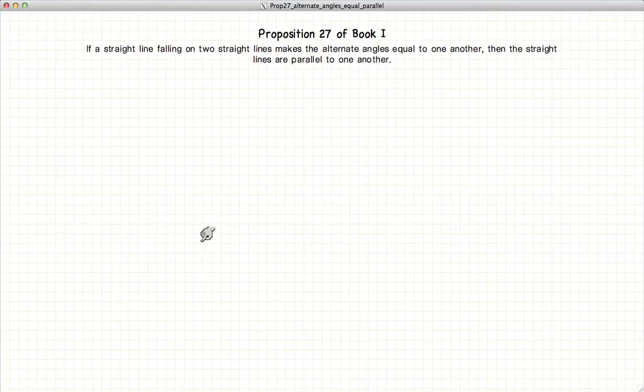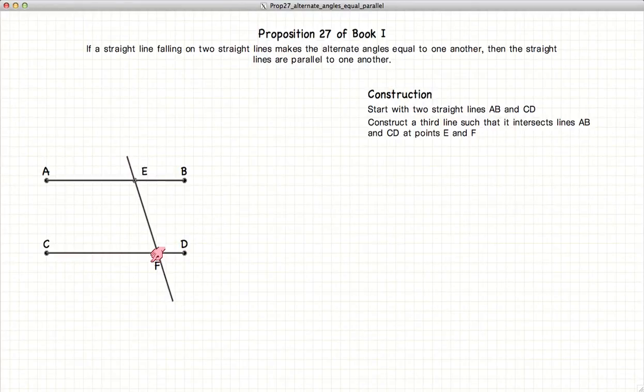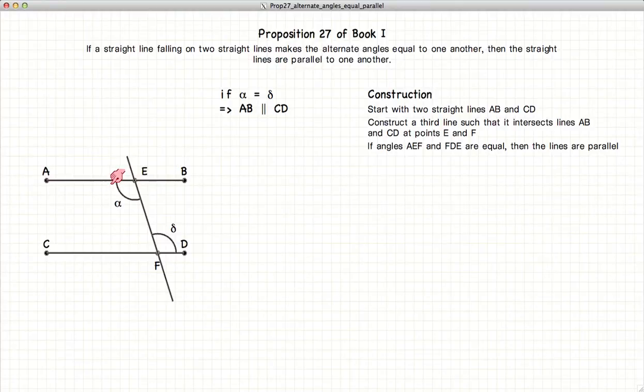So, let's begin our demonstration. Let's start with two lines, AB and CD. Have a third line cross at points E and F. Now we have angles alpha and delta, which are alternate angles. And this proposition states that if alpha is equal to delta, then AB and CD are parallel.